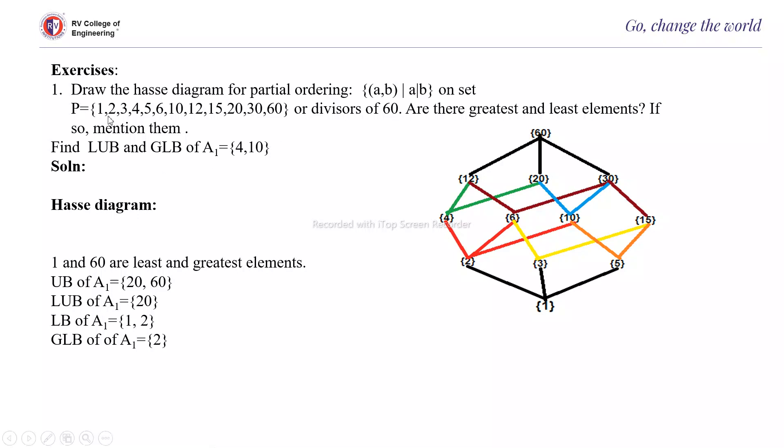Now you start from the smaller element. One divides all the elements, so one will come at the least. It comes at the bottom end. So then 1 divides 2, 1 divides 3, 1 divides 5.